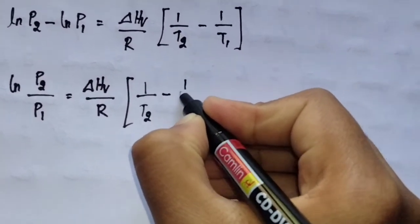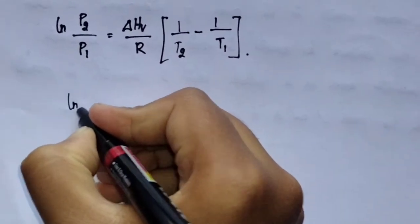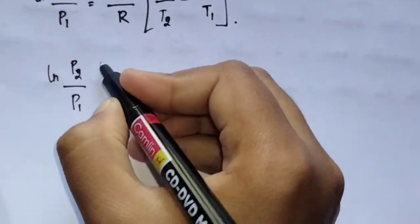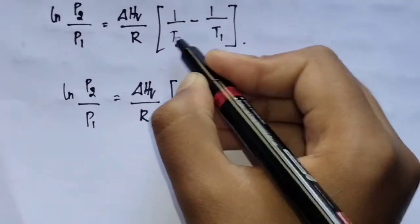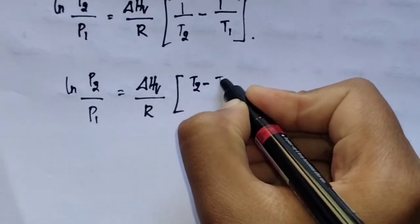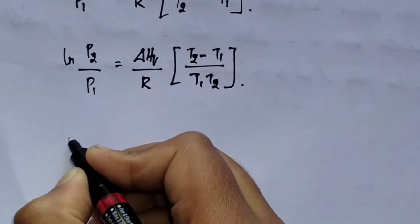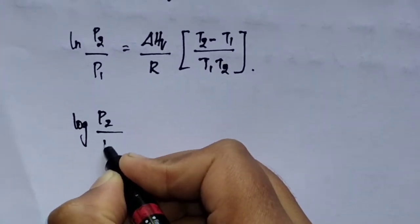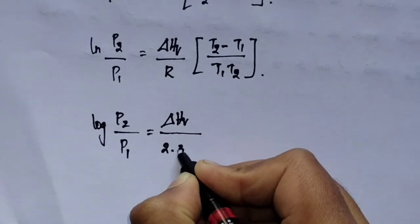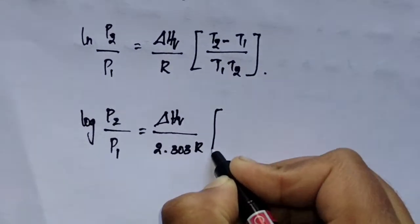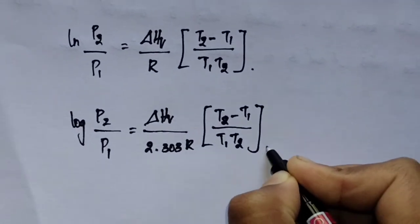Therefore, ln(P2/P1) is equal to ΔHv divided by R multiplied by (T2 minus T1) divided by (T1 multiplied by T2). This simplifies to ln(P2/P1) equal to ΔHv divided by 2.303R multiplied by (T2 minus T1) upon (T1 × T2). This is the final Clausius-Clapeyron equation.